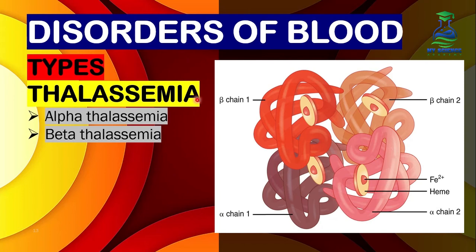Regarding the structure of hemoglobin, there are 4 protein chains present: two alpha chains (alpha chain 1 and alpha chain 2) and two beta chains (beta chain 1 and beta chain 2). There are two types of thalassemia: alpha thalassemia and beta thalassemia.